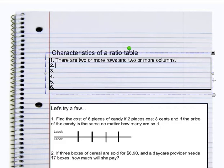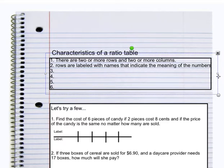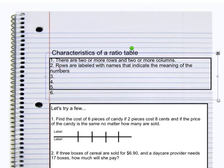Second, the rows are labeled and they're labeled with names that indicate the meaning of the numbers. If you're using a unit, it would also include the unit, right? So if you said this row is distance in feet, you would include the unit feet in that row.